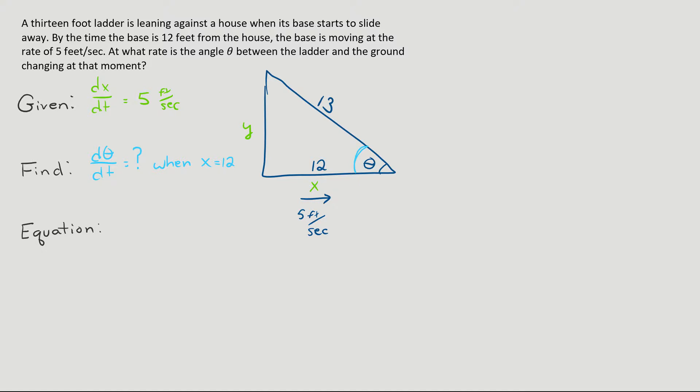That dθ/dt is changing. As the ladder is close up to the building, something like that, theta is bigger, and the rate at which it's changing is slower. But as the base slides away, it's falling quicker and quicker, and theta is changing, getting smaller at a faster pace. So that rate dθ/dt is changing, but we want to know at exactly the point when the base is 12 feet from the house.